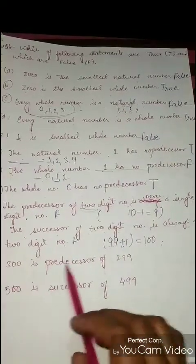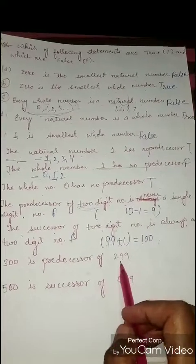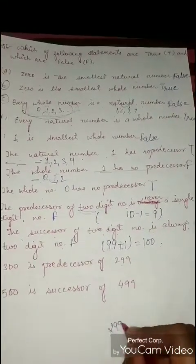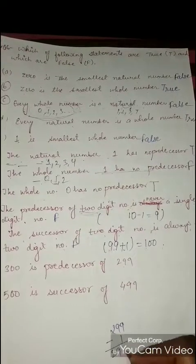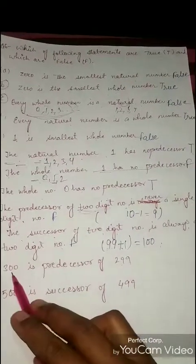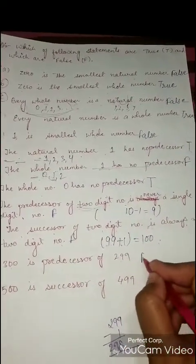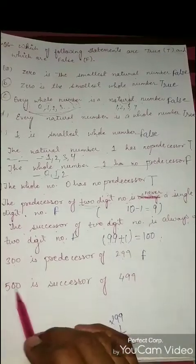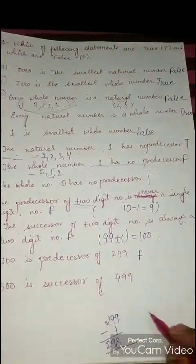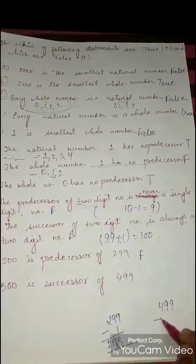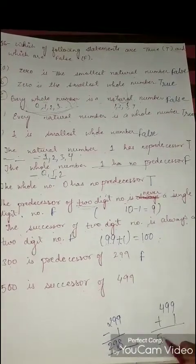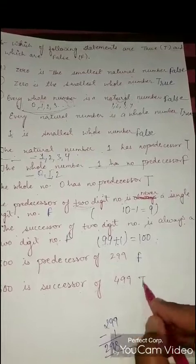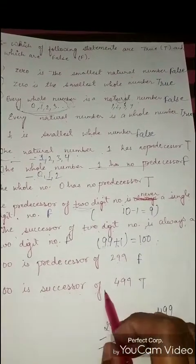Next: 300 is the predecessor of 299. Predecessor means we subtract 1, so 299 minus 1 is 298, not 300. So this is False. Next: 500 is the successor of 499. In successor we add 1, so 499 plus 1 is 500. This is True - 500 is the successor of 499.